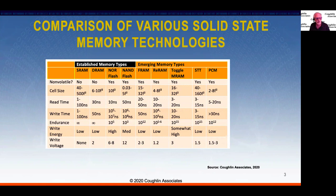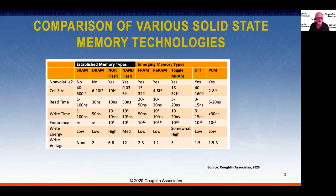There are issues with established memory types. SRAM takes up a lot of real estate per cell. DRAM is volatile and must be refreshed frequently, using a fair amount of energy. NOR flash appears to be reaching scaling limits below 28 nanometers. NAND flash is the major non-volatile memory used in SSDs. Resistive RAM promises fairly small cell sizes for high density, good read speeds, quick write times, reasonable endurance for some applications, and low write energies.